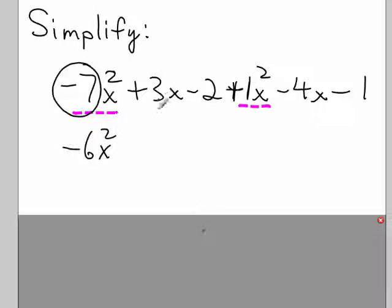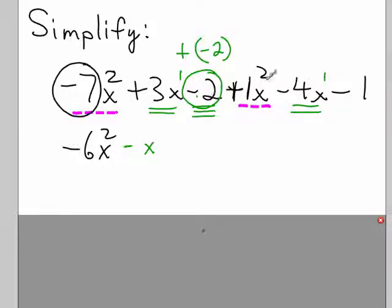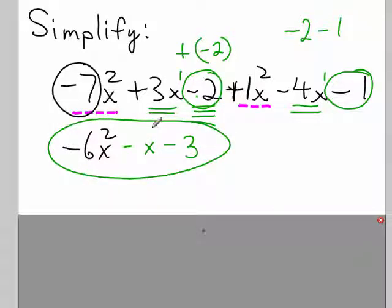Then we take our x terms, x to the 1 exponent. Think of it that way. And we combine those. 3 positive x strips minus 4x, that would be negative 1x. And we don't write the 1, we just leave it as minus x. And then our constants, negative 2. Remember that negative 2 is the same as plus negative 2. That's why I say negative 2. So I take the sign in front of it as the sign of the term. So it's negative 2 plus negative 1, or negative 2 minus 1 is negative 3. And there's our polynomial in simplified form. Thank you for listening.